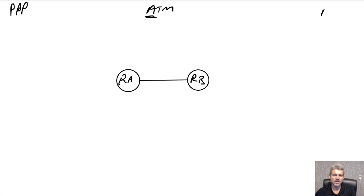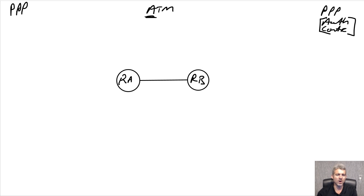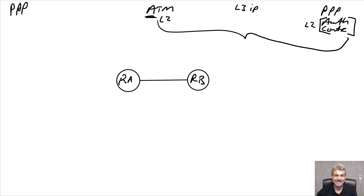PPP - point-to-point protocol - gives you things like authentication and control of packets. It gives you a bit more controlling infrastructure for a service provider type network so the service provider knows who you are when you connect. The challenge today is that ATM is a layer 2 technology and PPP is also a layer 2 technology, and we still want to connect everything to a layer 3 technology called IP. That's where things get quite interesting.